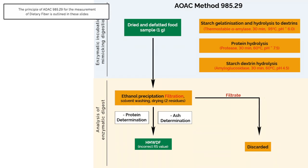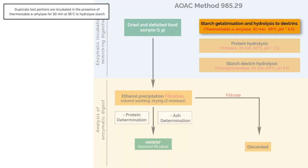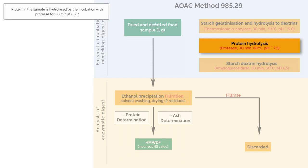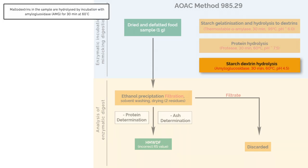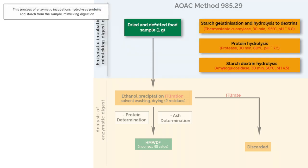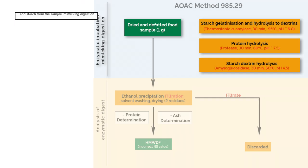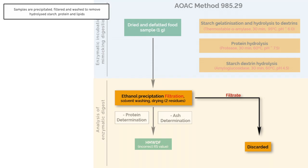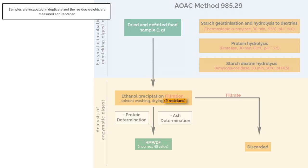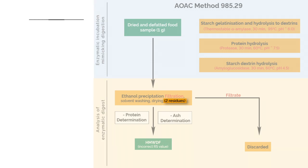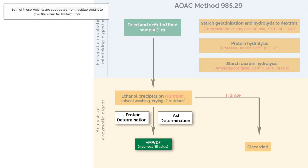The principle of the Prosky method for the measurement of dietary fibre is outlined in this figure. Samples are treated with a thermostable alpha amylase for 30 minutes at 95 to 98 degrees Celsius, during which starch is hydrolyzed. Protein in the sample is hydrolyzed by incubation with protease for 30 minutes at 60 degrees Celsius. Maltodextrins are hydrolyzed by incubation with amyloglucosidase for a further 30 minutes. Samples are then treated with four volumes of ethanol to precipitate high molecular weight soluble dietary fibre, then filtered and washed with aqueous ethanol, ethanol and acetone. Samples are incubated in duplicate; one residue is analysed for ash content and the second for residual protein, and both weights are subtracted from residue weights to give the value for dietary fibre.